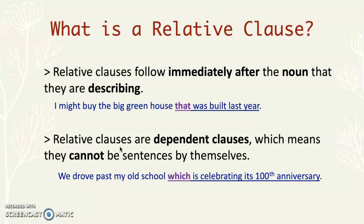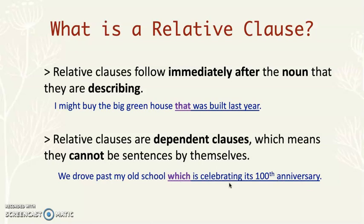Relative clauses are dependent clauses, which means they cannot be sentences by themselves. They depend on the independent clause. The independent clause is one part of the sentence, but these relative clauses are not sentences by themselves. For example, 'We drove past my old school, which is celebrating its 100th anniversary.' This whole clause is talking about the school, and it can't be a sentence by itself.